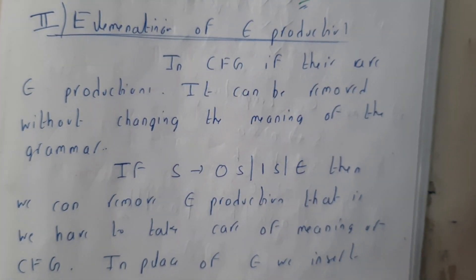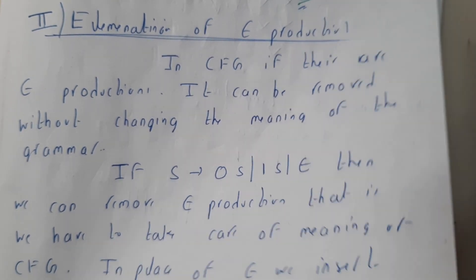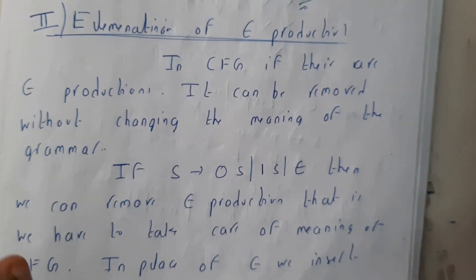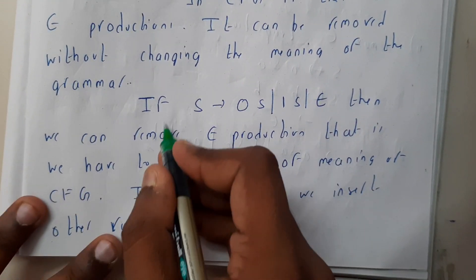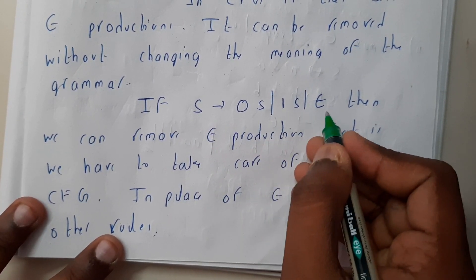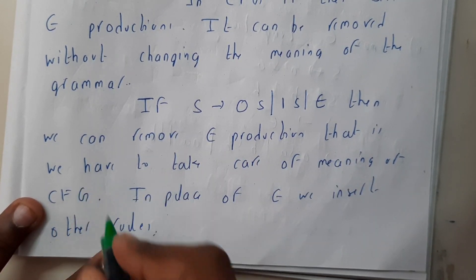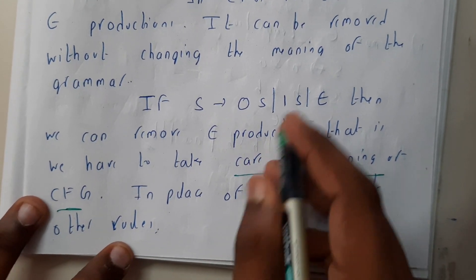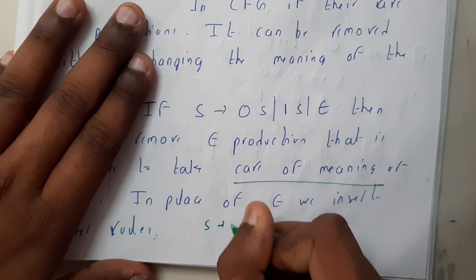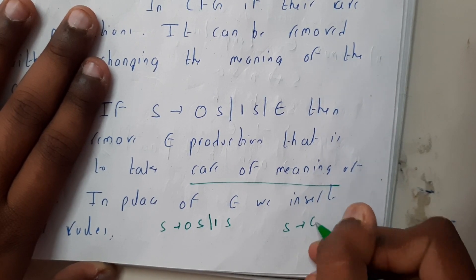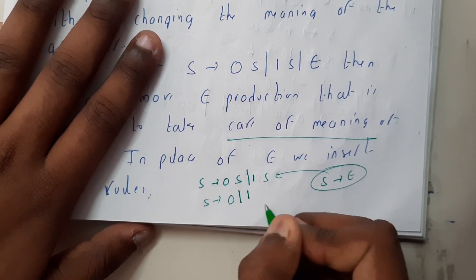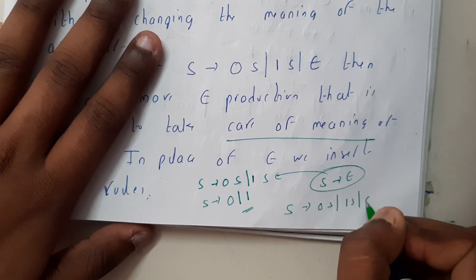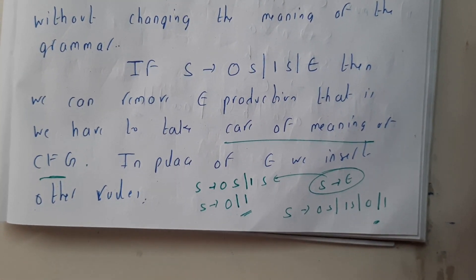Now let us go through eliminating epsilon productions. Whenever you try to remove an epsilon production, first replace the productions belonging to epsilon. In a CFG, epsilon productions can be removed without changing the meaning of the grammar. For example, if S tends to 0S | 1S | epsilon, we remove the epsilon production by substituting it: S tends to 0S and 1S are available, and 0 epsilon and 1 epsilon also give us 0 and 1. Hence our grammar becomes S tends to 0S | 1S | 0 | 1 — the epsilon is removed.